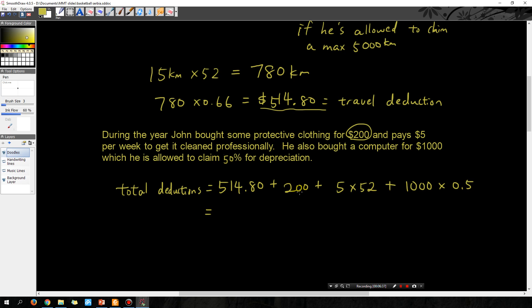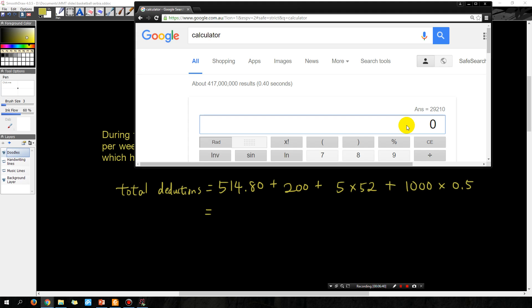So you're going to claim 50% of $1,000, so 1,000 times 0.5 for the 50%.